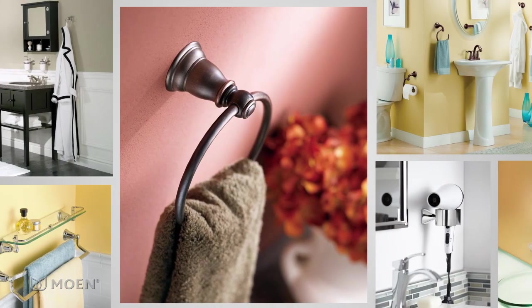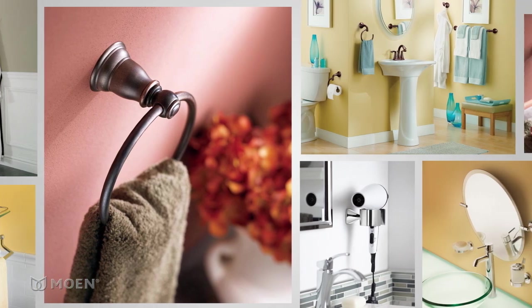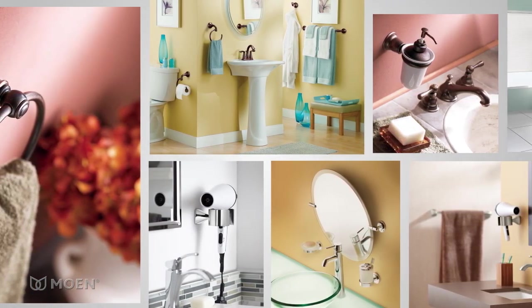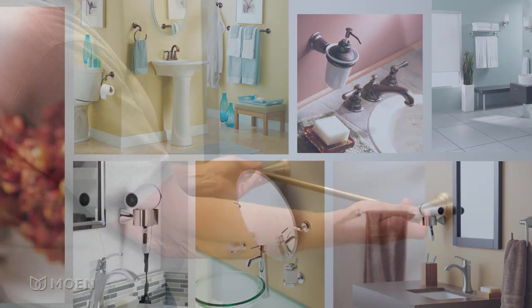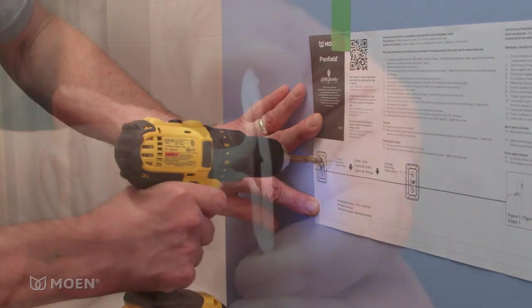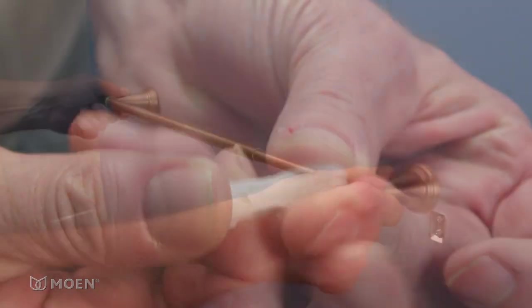Moen offers a distinctive line of bath accessories such as towel rings, robe hooks, towel bars, and paper holders to help you create a perfectly coordinated bath. In this video, we'll demonstrate how to install an adjustable towel bar into drywall using anchors.